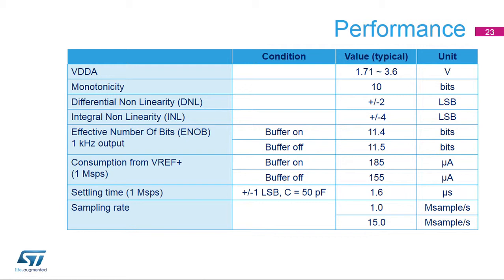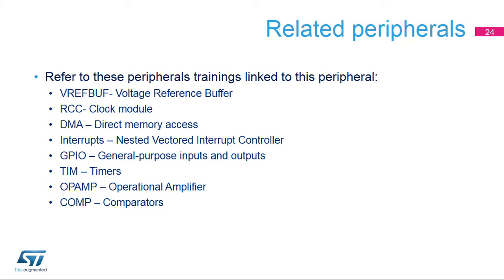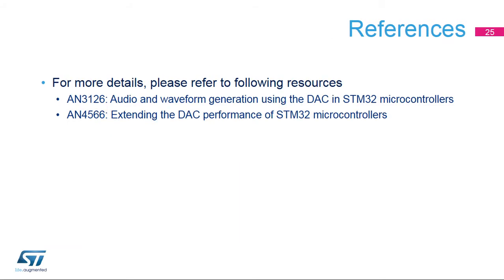The DAC buffered output has a settling time of 1.6 microseconds with a 50 picofarad load. The DAC can handle a sampling rate of 1 mega sample per second or 15 mega samples per second. This concludes the overview; a list of related peripherals and application notes dedicated to DAC topics are also available for further reference.